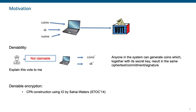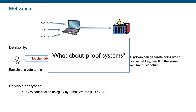Interestingly, this notion was a long-standing open problem for encryption schemes. Sahai and Waters were the first to introduce a CPA construction for deniable encryption in STOC 2014. However, what about proof systems? I mentioned encryptions, commitments, signatures, but one of the main building blocks for cryptographic primitives are without doubt proof systems. In this paper, we try to answer that question and we define a slightly stronger definition than deniability, which we call explainability.